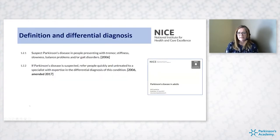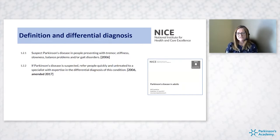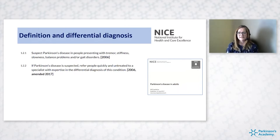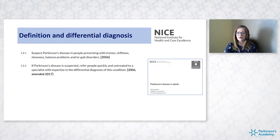I want to start by thinking about the NICE guidelines. The guidelines republished in 2017 say to suspect Parkinson's in people presenting with tremor, stiffness, slowness, balance problems, or gait disorders. They say to refer people quickly and untreated — the untreated part is really important — to an expert in differential diagnosis. Already the guidelines are telling us there are other conditions to look out for, and the person you refer to needs to be an expert in those conditions too, not just in Parkinson's alone.